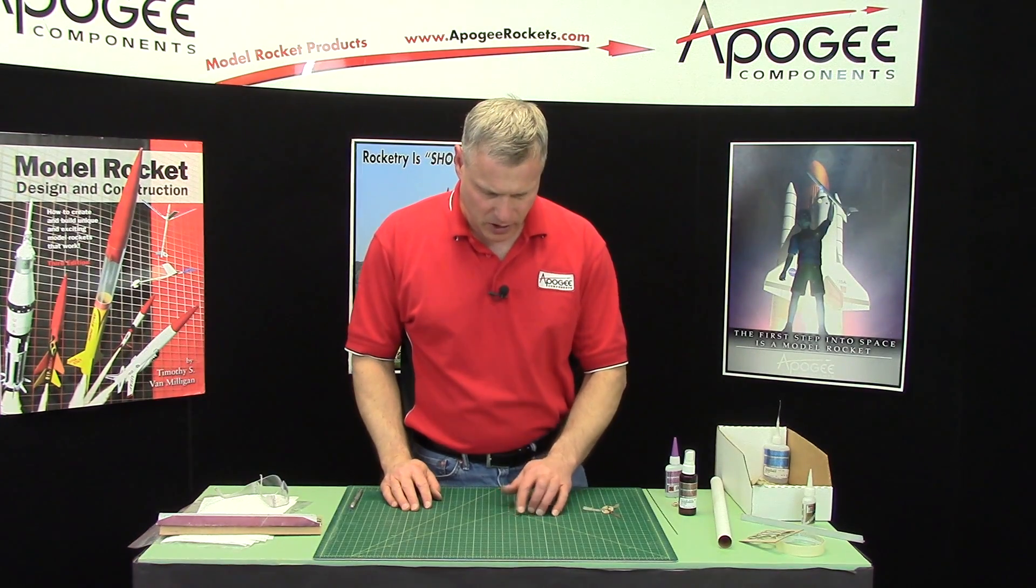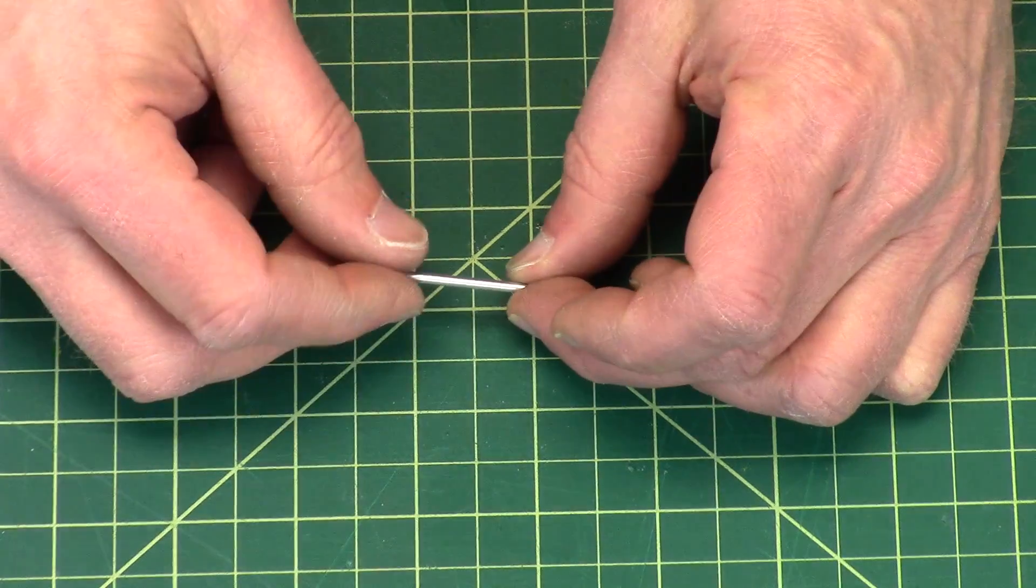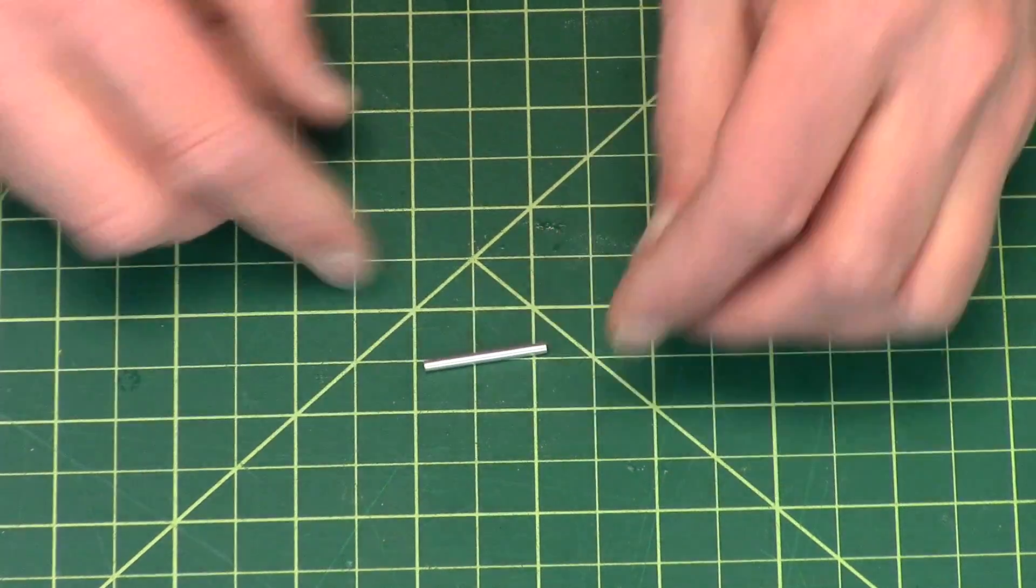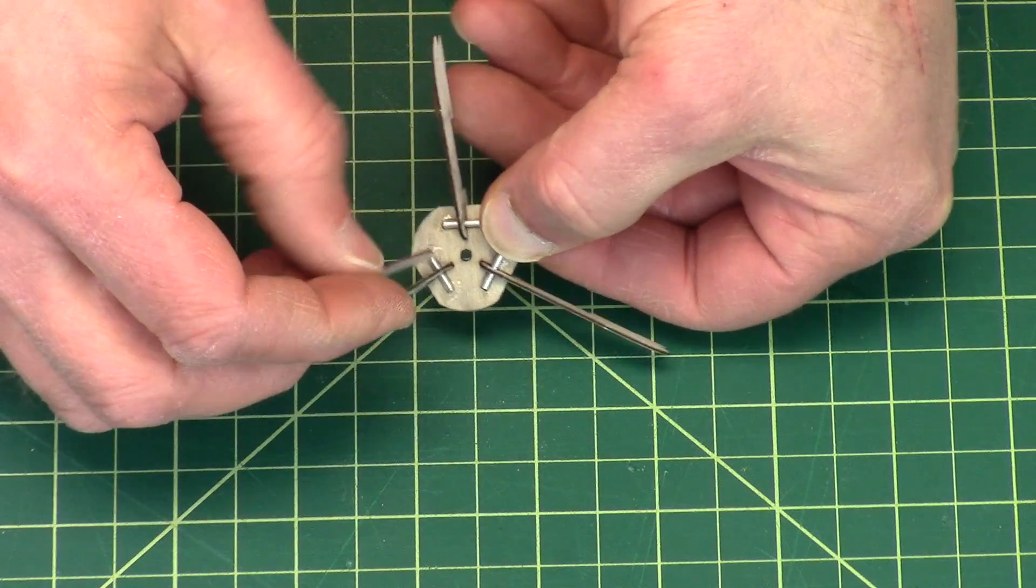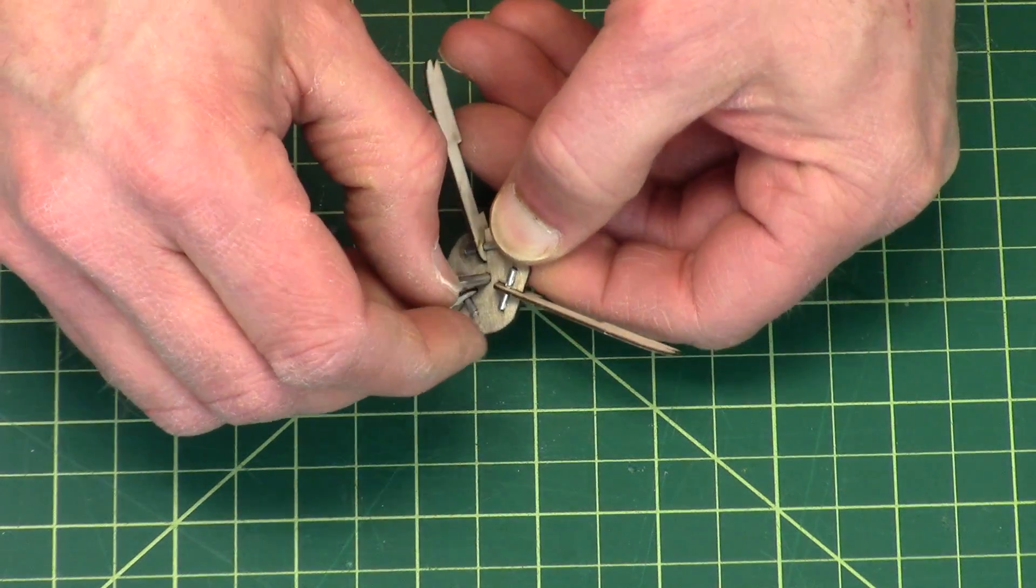From the bag, go ahead and remove the other little aluminum tube. This one is the larger diameter, and this one will fit into that hole on the hub.